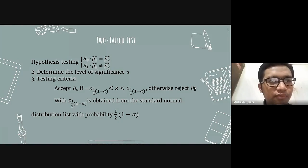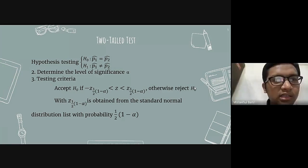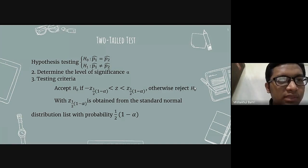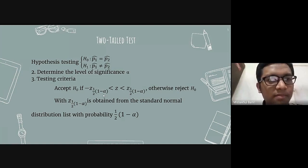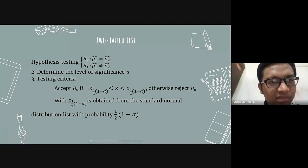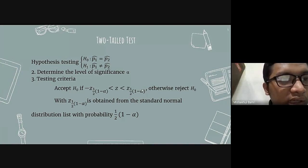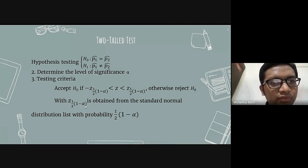For hypothesis testing, the null hypothesis is P-hat 1 equal to P-hat 2, and the alternative hypothesis is P-hat 1 is not equal to P-hat 2. The second step is to determine the level of significance alpha. The third step is the testing criteria: accept the null hypothesis if minus Z of half of (1 minus alpha) is less than or equal to Z, which is less than or equal to Z of half of (1 minus alpha); otherwise reject. Z of half of (1 minus alpha) is obtained from the standard normal distribution list with probability of half of (1 minus alpha).